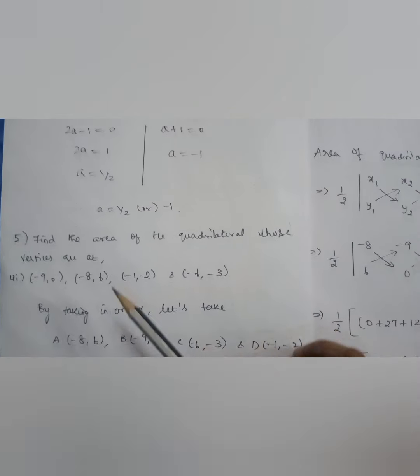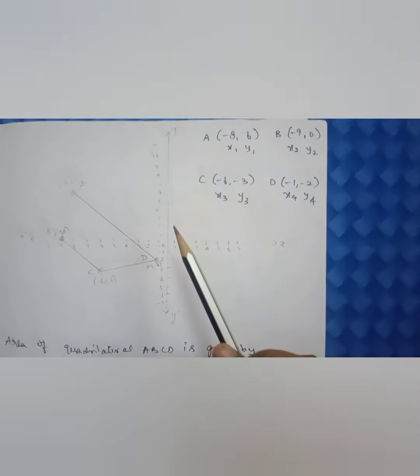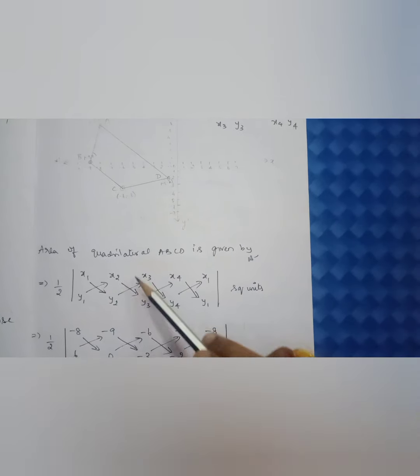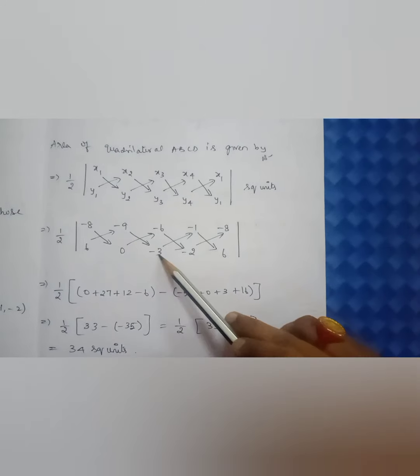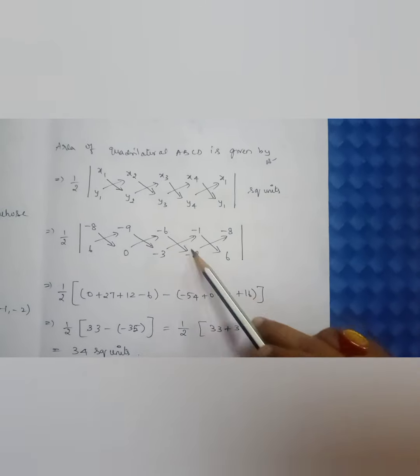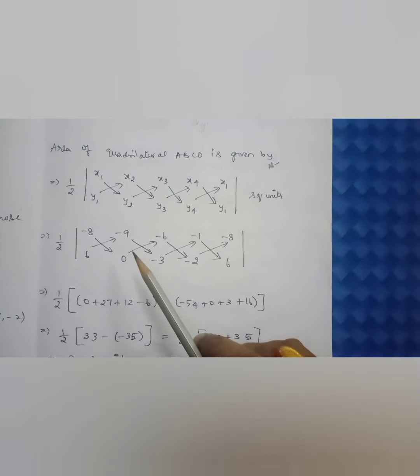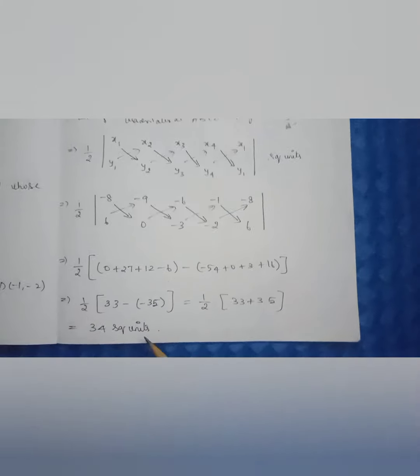Fifth sum: find the area of the quadrilateral whose vertices are given. You have to take the vertices in order — by plotting them on a rough graph you can see where the points are and accordingly label them A, B, C, D. The formula is: half × | (x₁y₂ − x₂y₁) + (x₂y₃ − x₃y₂) + (x₃y₄ − x₄y₃) + (x₄y₁ − x₁y₄) |. With vertices (−8,6), (−9,0), (−6,3), (−1,−2): multiplying gives −8×0=0, (−)(−)9×3=27, (−)(−)6×2=12, (−)×6=+6, and the second row: 6×(−9)=−54, 0×6=0, (−)(−)3×(−)8=16. The answer comes out to be 34 square units.